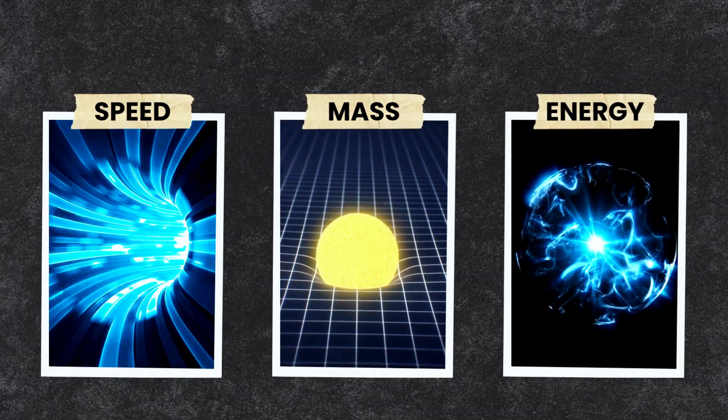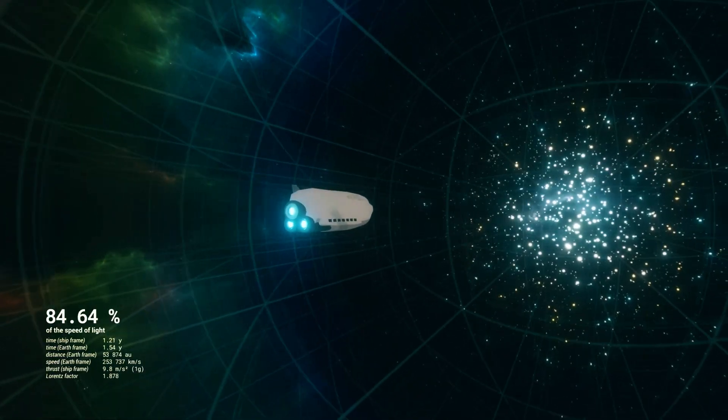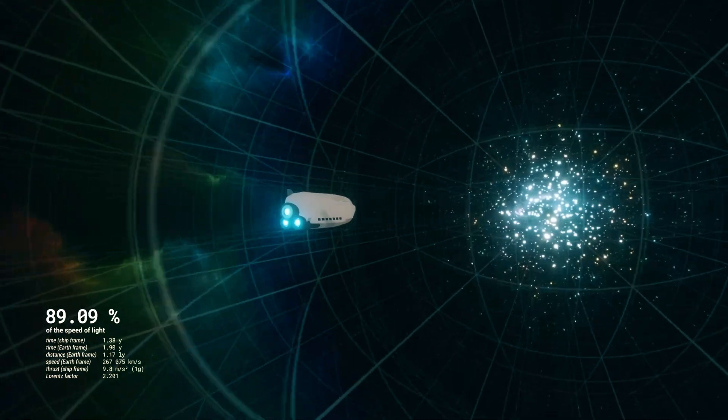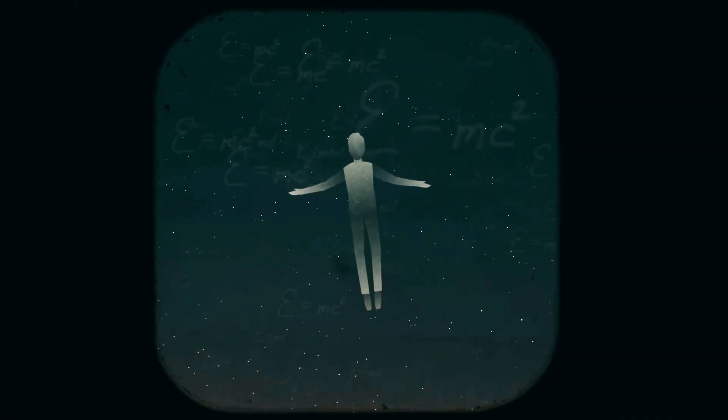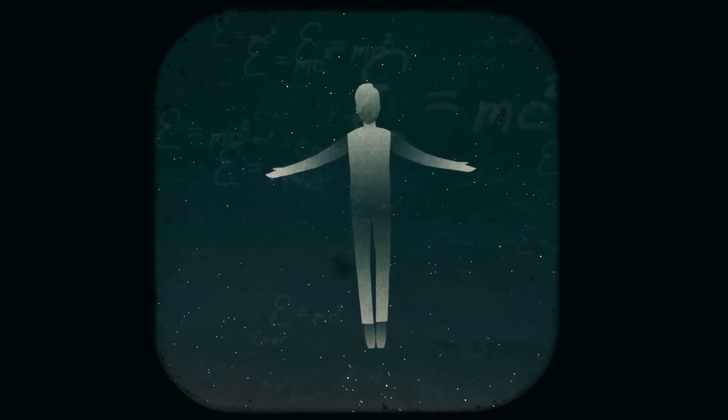The answer lies in the intricate relationship between speed, mass, and energy. As an object approaches the speed of light, its kinetic energy skyrockets. Thanks to Einstein's famous equation, E equals mc squared, we know energy and mass are deeply connected.